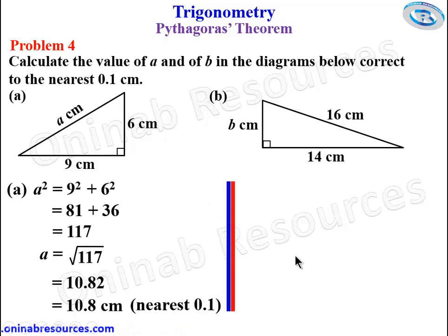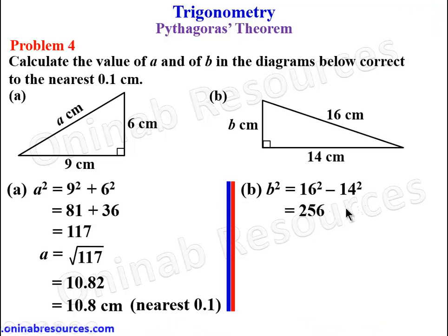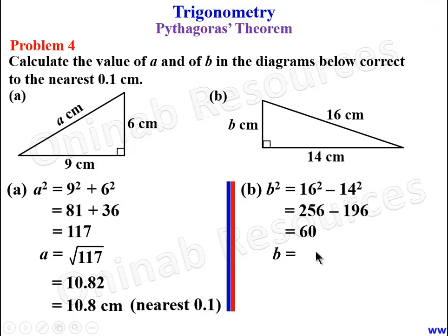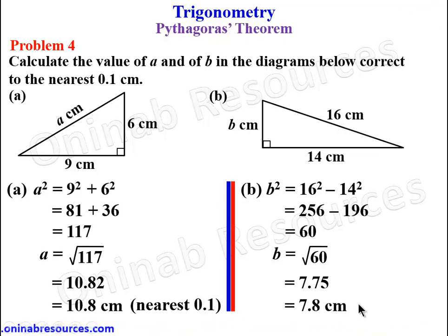For B, 16 is the hypotenuse and the unknown is not the hypotenuse. B squared equals 16 squared minus 14 squared: 256 minus 196, giving 60. B is the square root of 60, which gives 7.75. To the nearest 0.1, we have 7.8 centimeters. That is the end of problem 4.